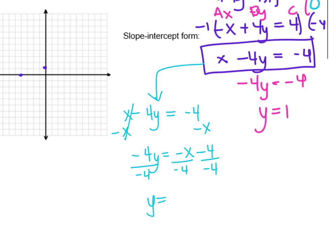So y equals, now here we have a negative x over a negative 4. The negative over the negative will become positive. And then remember that's like a 1 in front of the x. So it's going to be a 1 fourth.